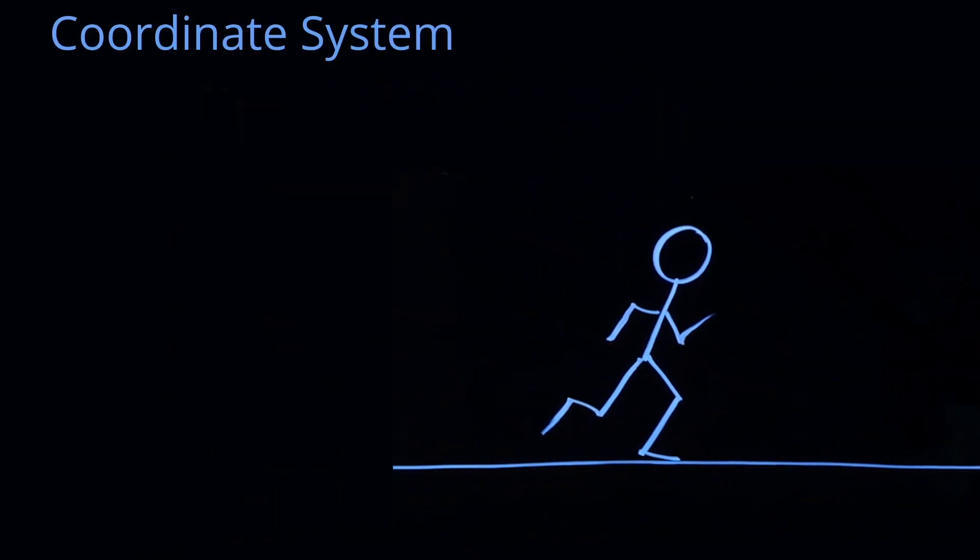What is a coordinate system? Well, the first thing that we want to choose is an origin. We can pick the origin anywhere we want. That's a degree of freedom. So let's choose a point along our road as our origin.